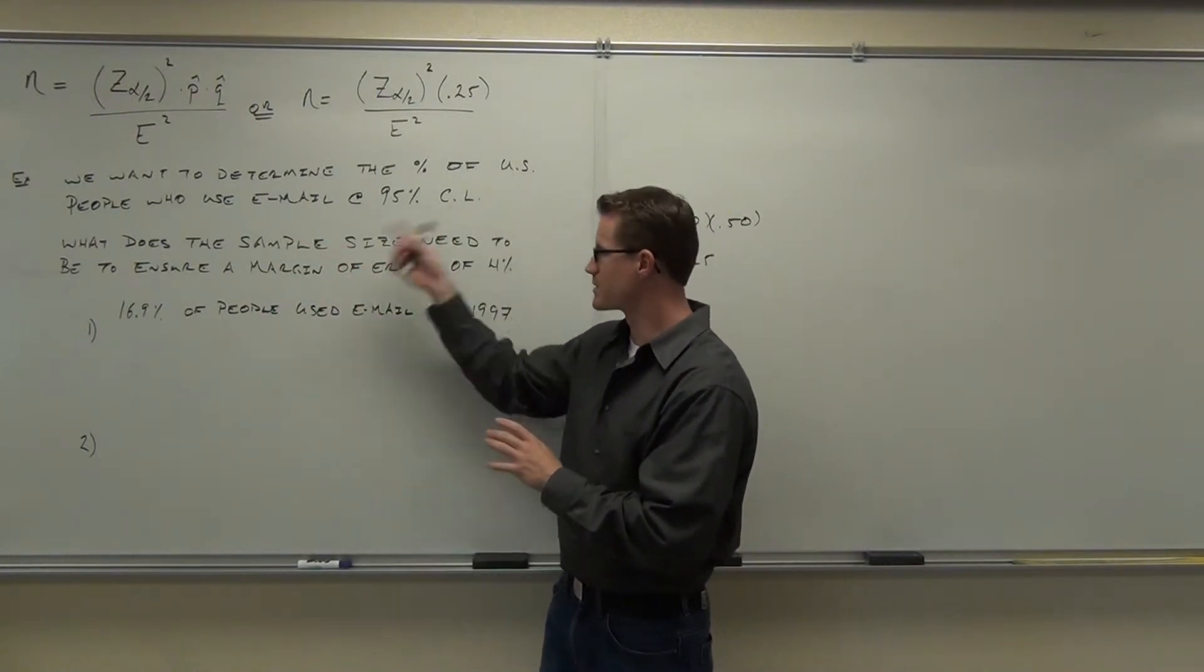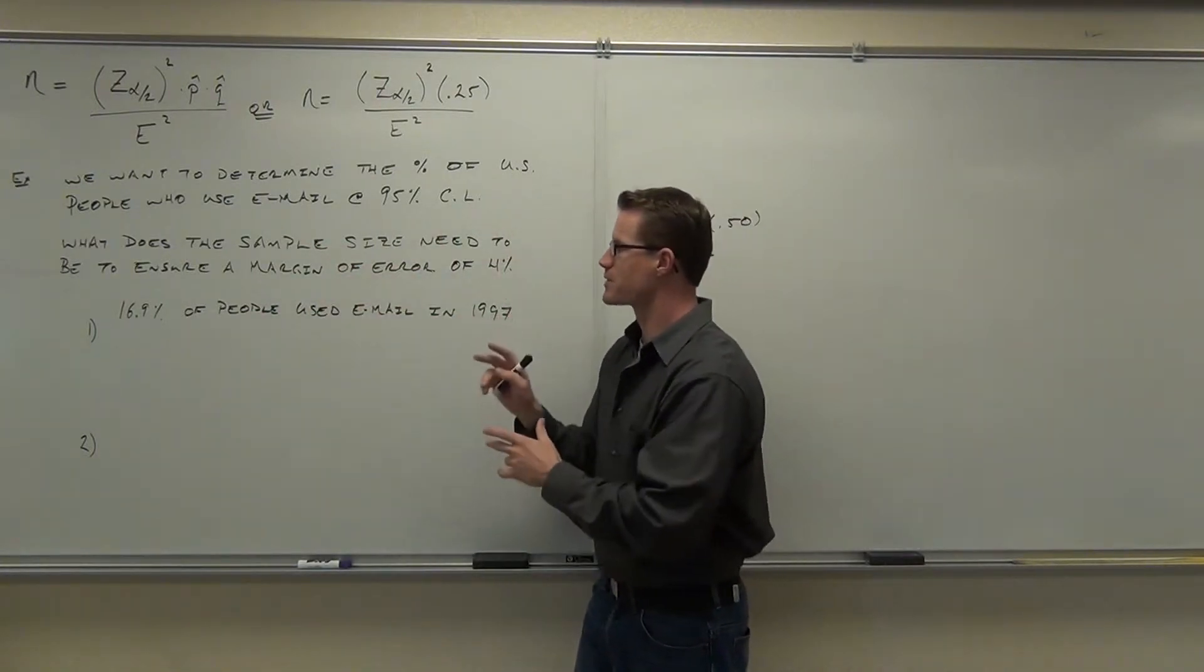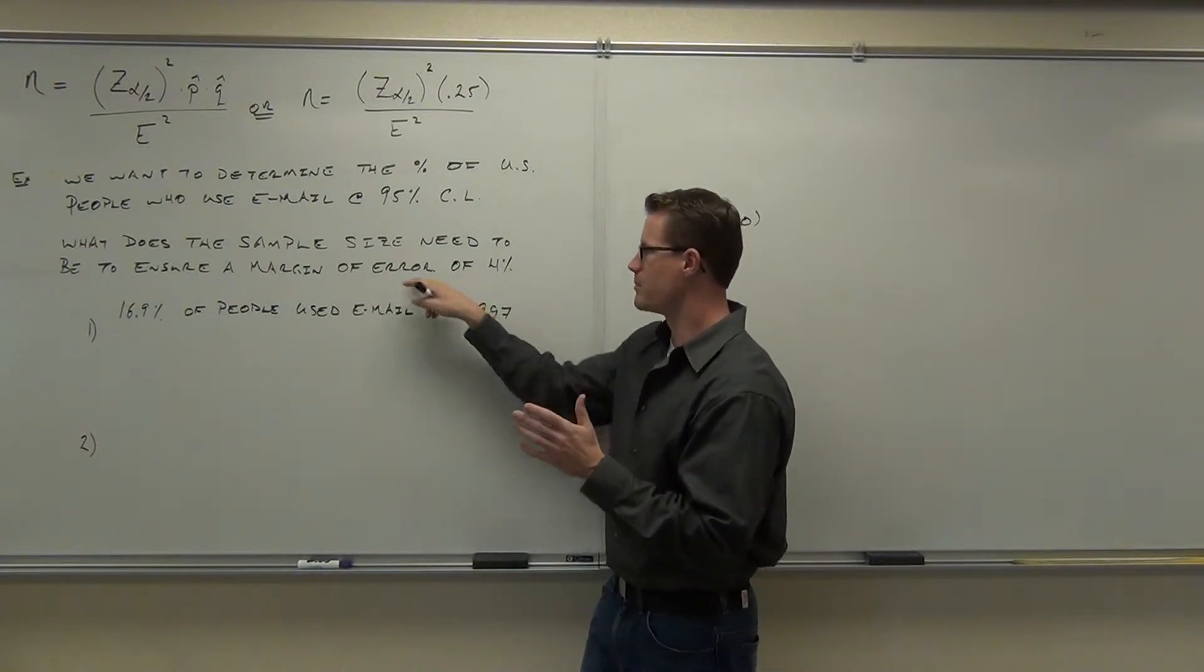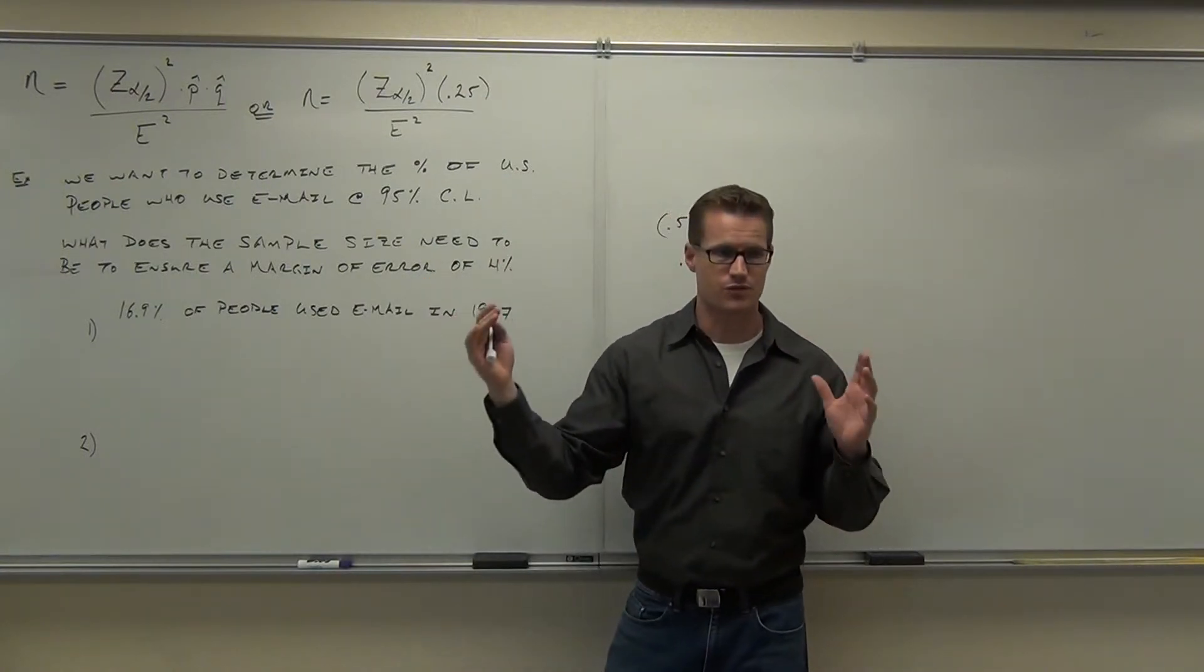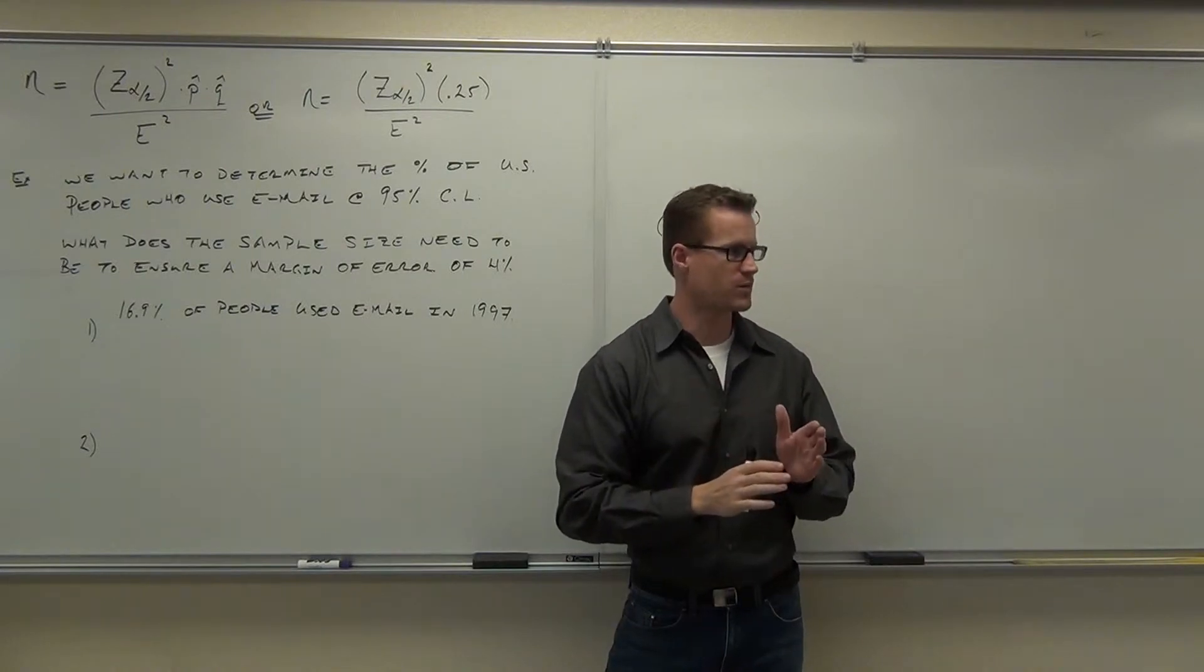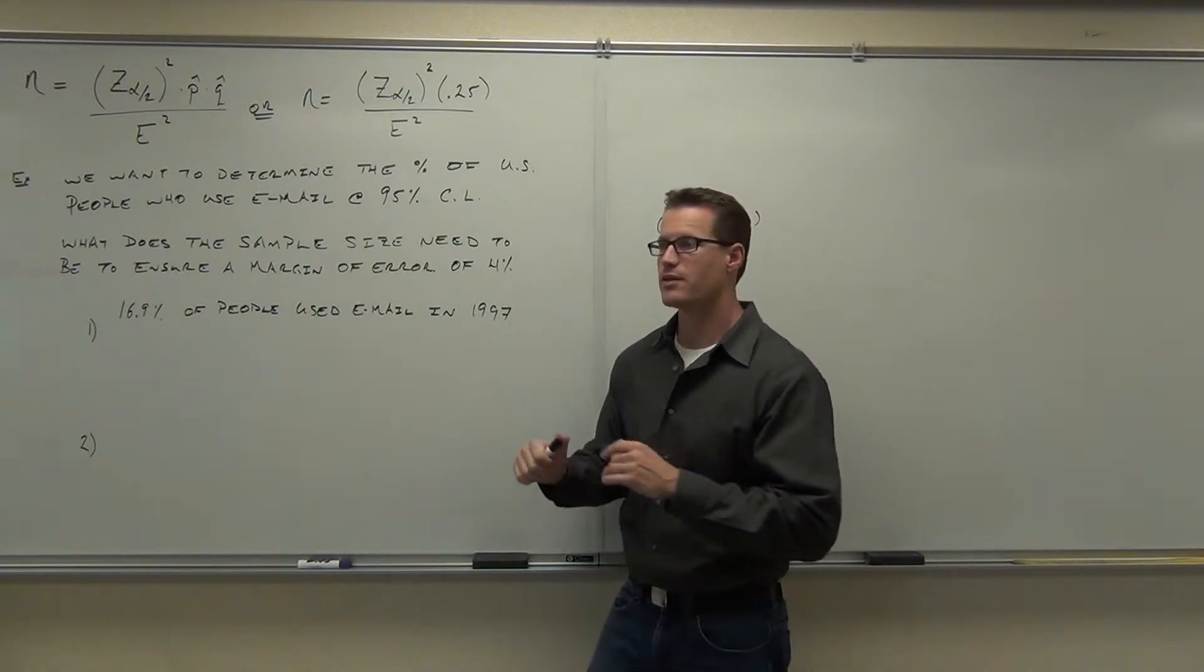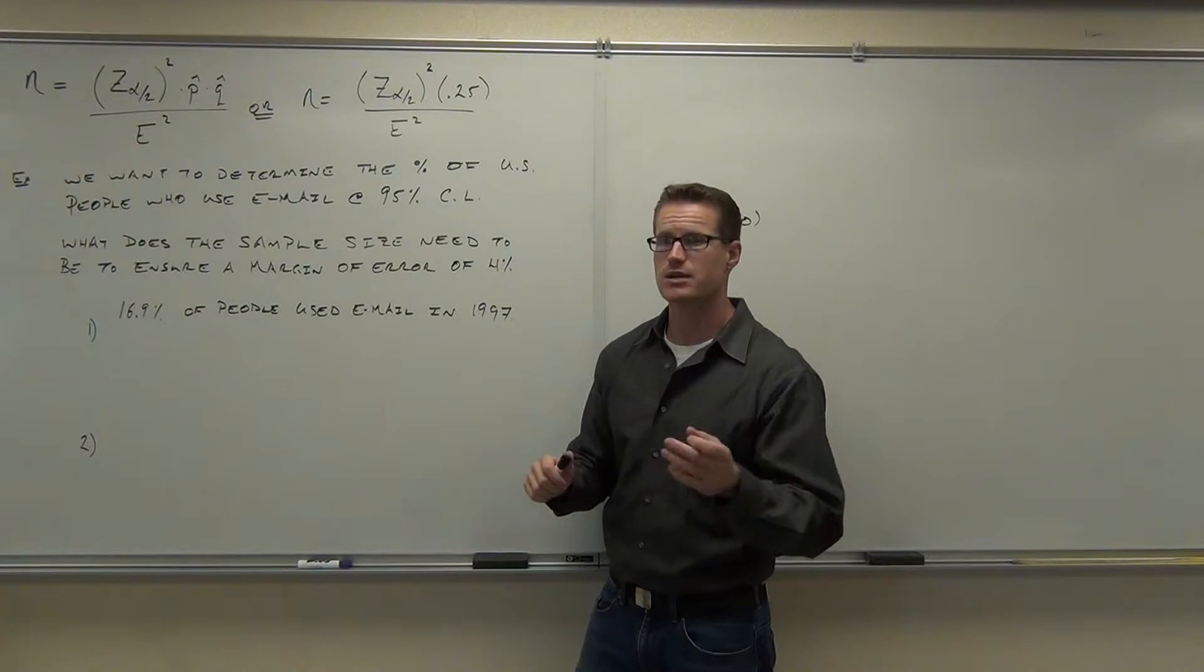So we're going to do a little research first. This is how it will be done in real life. You say, okay, I need to make this confidence level. I want to be 95% confident, but I also want a margin of error of 4%. I don't want a large margin of error. I want a small margin of error. So we're going to find the sample size that we need to make that happen.